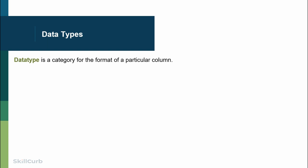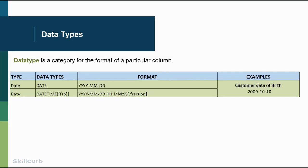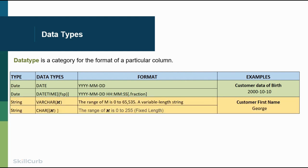We will be talking about data types — the type of format that a column has in the database. Whenever you try to insert data, we need to know if it's a date, a string, or a number. For the date column, the format is YYYY for year, dash MM for month, and dash DD for day. So 2000-10-10 would be the format of a data element. The second date format is a datetime where we have hours, minutes, and seconds as well. For certain scenarios, we can have the date field defined in a more granular way. Date would be the first data type.